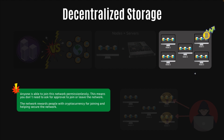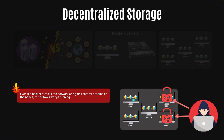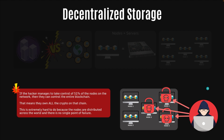The network rewards people with cryptocurrency for joining and helping secure the network. So the more nodes that join the Bitcoin network, the more secure it becomes. Even if a hacker attacks the network and gains access to some of the nodes, you're still fine — the other nodes have a full copy of the blockchain and the network keeps running just like normal. But if the hacker gains control of 51% of the nodes, then we have a problem. They can gain control of the entire blockchain, which means they own all of the crypto on that chain.